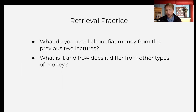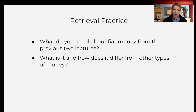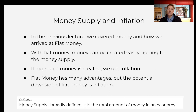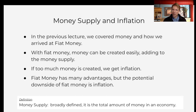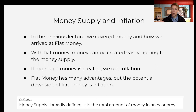Let's connect this back to the first two lectures with a little retrieval practice. Ask students what they recall about fiat money and how it differs from other types of money. With fiat money, it's not commodity money, so it has no value in and of itself. Because of that, it can be created very easily — the central bank can just print up the money. And as we just covered, as we add money to the overall money supply, we will get inflation.